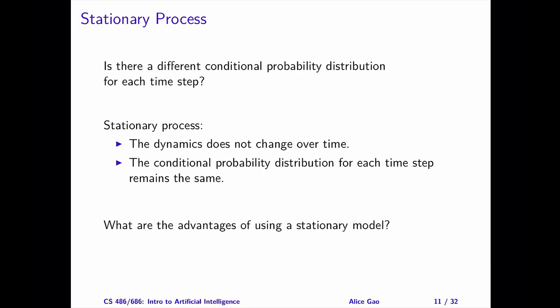To simplify our model, we can choose to make it stationary. A stationary process doesn't mean the world does not change over time. The world still changes from one time step to the next. The word stationary means that how the world changes remains fixed. In other words, the transition probabilities are the same for every time step.